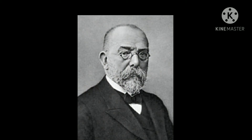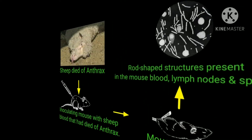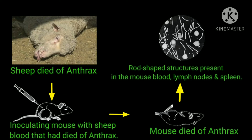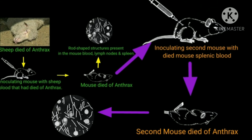Robert Koch studied anthrax using mice, guinea pigs, rabbits, dogs, and other animals. He discovered that inoculating a mouse with blood from a sheep that had died of anthrax caused the mouse to die the following day. At autopsy, rod-shaped structures were present in the blood, lymph nodes, and spleen. Inoculation of a second mouse with splenic blood from the first mouse produced the same result.